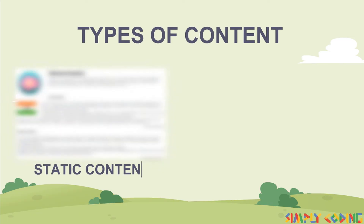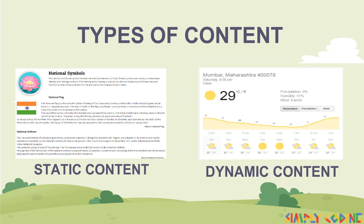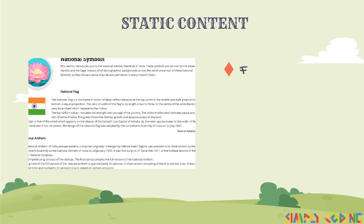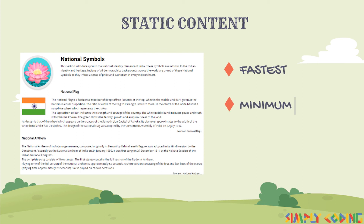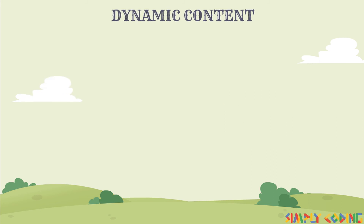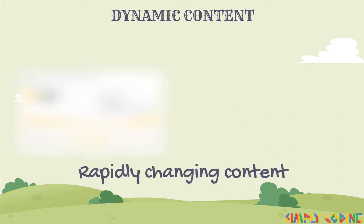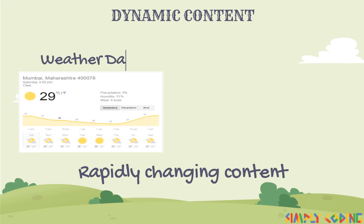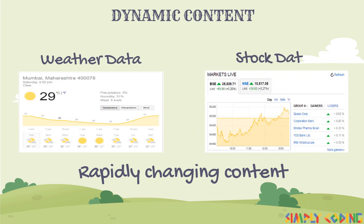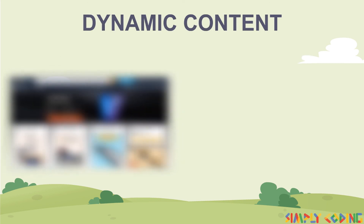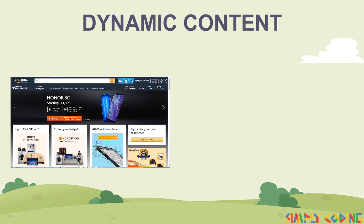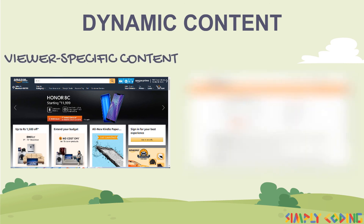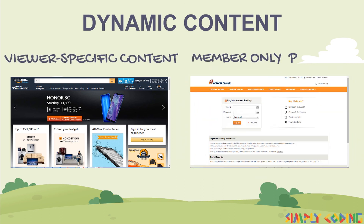A web page could have static or dynamic content. Static content is the fastest and most efficient way to deliver content — it takes a minimum amount of resources and is the most secure. Dynamic content is typically for data which is constantly changing, for example weather data or stock data where content changes too quickly, or pages that display viewer-specific content such as an e-shopping site, or pages that display content conditionally such as when you log into a banking site.